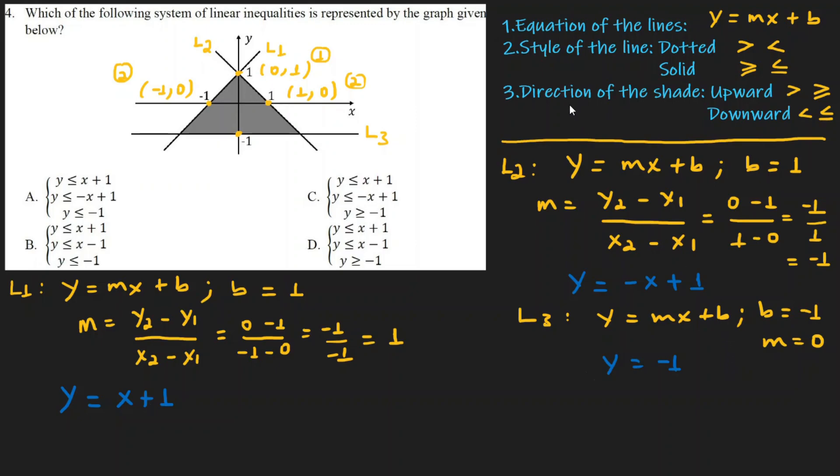Now let's check the answer choices. The equations are: y equals x plus 1, y equals minus x plus 1, and y equals minus 1. Looking at the line style, all lines are solid, so the inequalities will have or equal to.